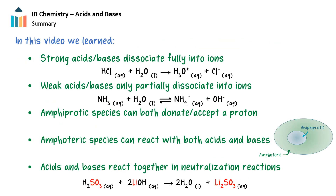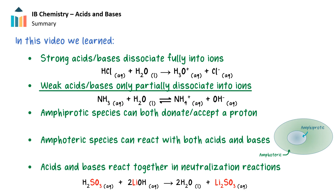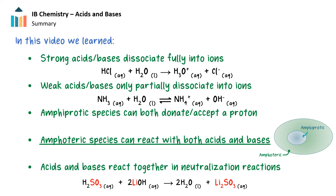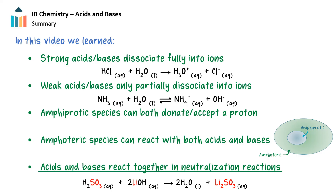And that's it for this video on acid-base properties. In this video, we learned that strong acids and bases dissociate fully into their constituent ions. In contrast, weak acids and bases only partially dissociate into their constituent ions. We also learned that amphiprotic species are species that can both donate or accept a proton, while amphoteric species are species which can react with both acids and bases. Finally, we learned that acids and bases react together in various types of neutralization reactions.